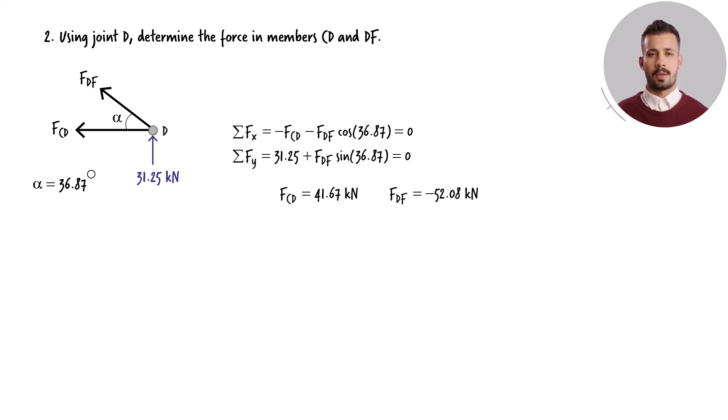The sign associated with each force reveals if the member is experiencing tension or compression. A positive sign signifies that the member is under tension, while a negative sign indicates that the member is in compression. Therefore, member CD is in tension, and DF is in compression.